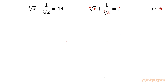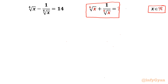Welcome back to Infigyan, my dear friends. Today in this video we are going to take up one very interesting and challenging radical puzzle from mathematical olympiads. The given equation is the 4th root of x minus 1 over the 4th root of x equal to 14. We have to evaluate the expression 6th root of x plus 1 over 6th root of x, where x belongs to real numbers. I will demonstrate two different ways to solve this question.